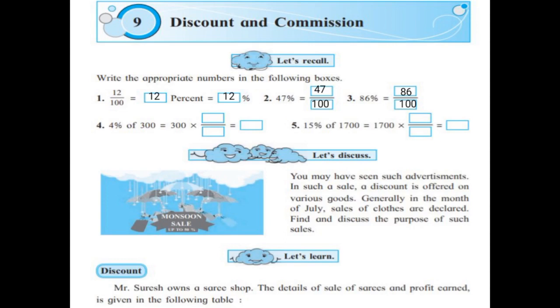4% of 300 means 300 multiplied by 4 upon 100. The zeros get cancelled on numerator and denominator. 4 times 3 is 12. So the answer is 12.